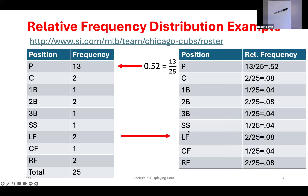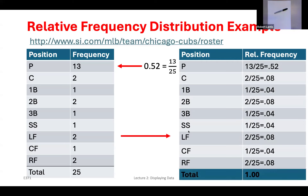What should those relative frequencies always add up to? If I go through every single possible response — these are the only positions you could have on the team — all the numerators add up to the total number of observations in the data set. So when I add up all my relative frequencies, I have the total observations divided by the total observations, which gives a value of 1. We'll use this concept later.